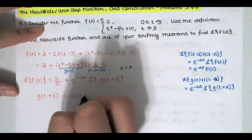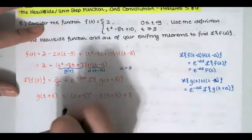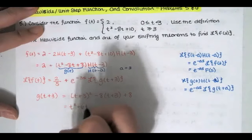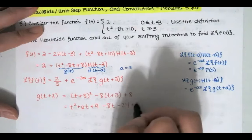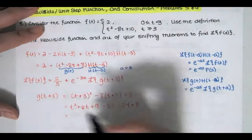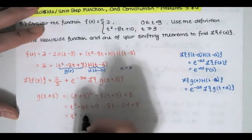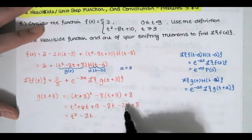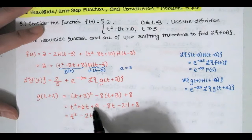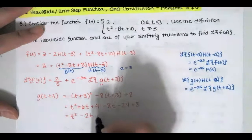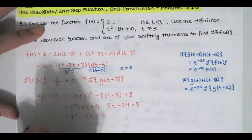We have t plus 3 quantity squared minus 8 times t plus 3 plus 8, and we'll do some algebra. Writing that out using FOIL, then distributing the negative 8, and collecting like terms: we get t squared, then 6t minus 8t is negative 2t, then negative 24 plus 8 is negative 16, and negative 16 plus 9 is negative 7. That's our g of t plus 3, which equals t squared minus 2t minus 7.